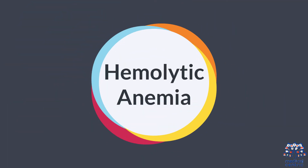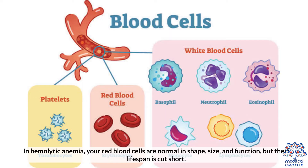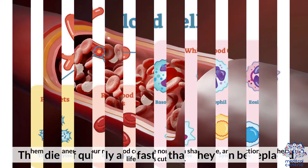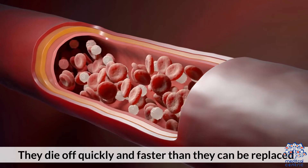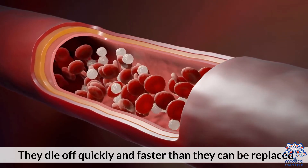Type 4: Hemolytic Anemia. In hemolytic anemia, your red blood cells are normal in shape, size, and function, but their lifespan is cut short. They die off quickly and faster than they can be replaced.